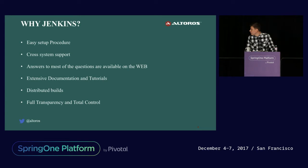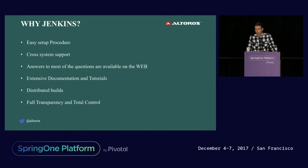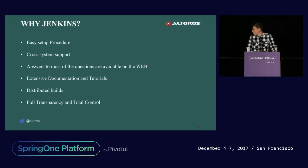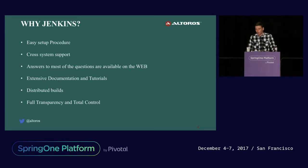And if we are talking about the PCF tile which I am here representing, you just need to download this tile from the Pivotal Network, import it to the PCF Ops Manager, click Apply Changes, and that's all. You will have a fully working Jenkins environment within your Pivotal Cloud Foundry infrastructure. Jenkins has a very low entry threshold — when you start working, you can go to the web UI and see that all buttons, text fields, and checkboxes are provided with descriptions of what should be included there.